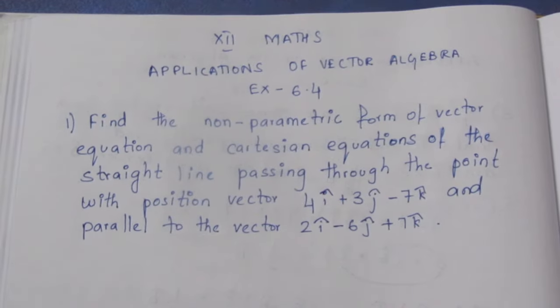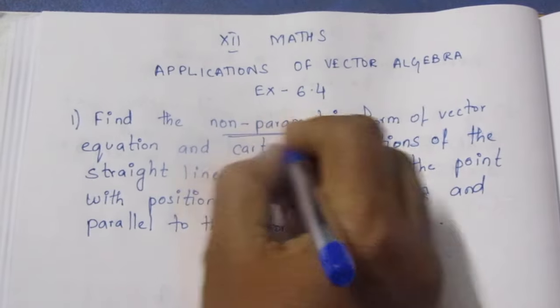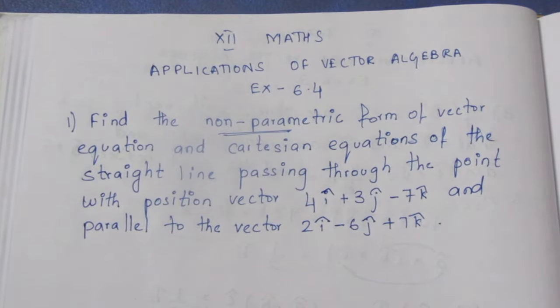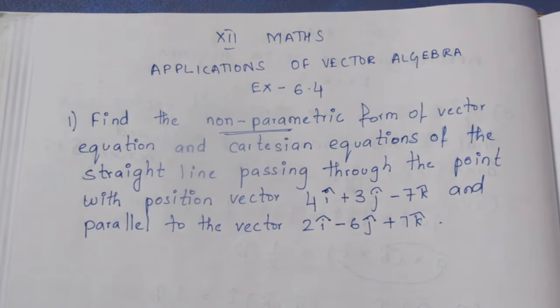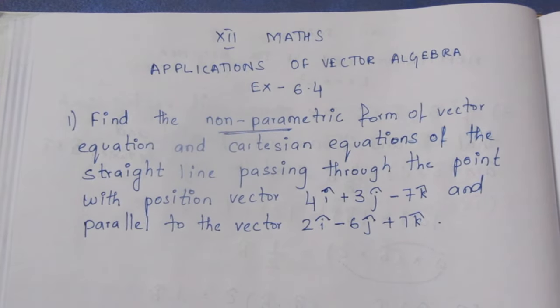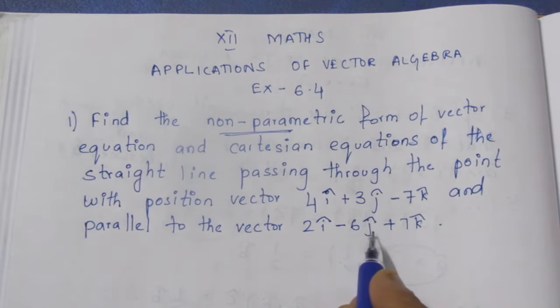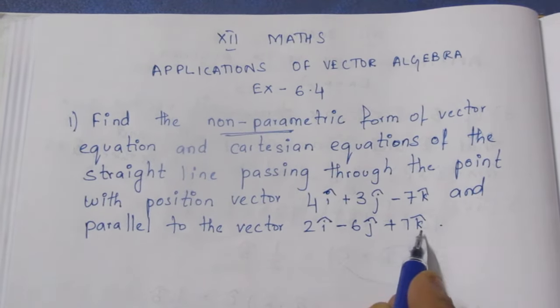Find the non-parametric form of vector equation and Cartesian equation of the straight line passing through the point with position vector 4i cap plus 3j cap minus 7k cap and parallel to the vector 2i cap minus 6j cap plus 7k cap.